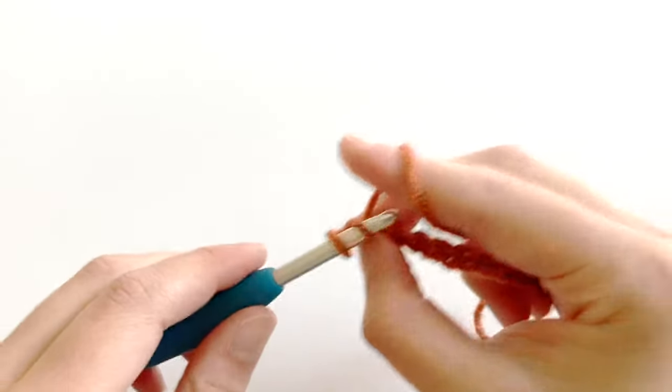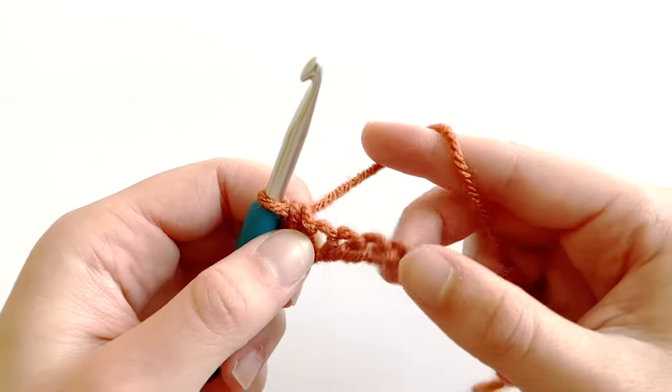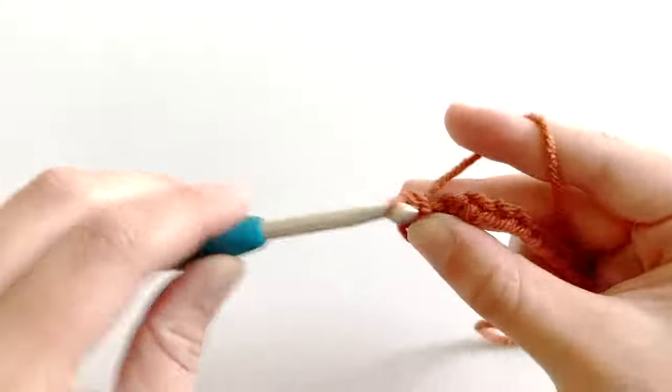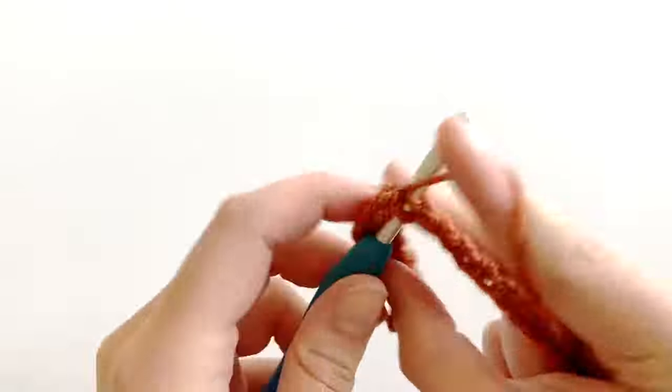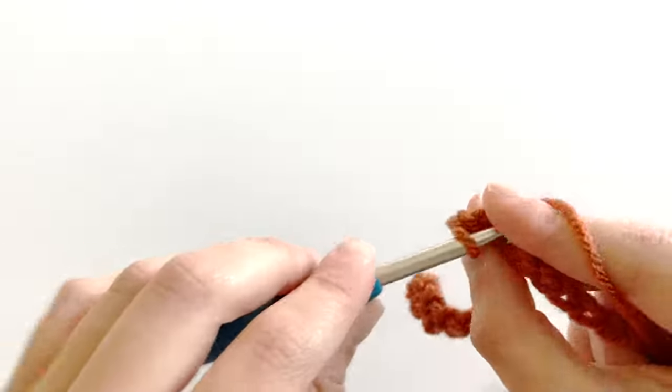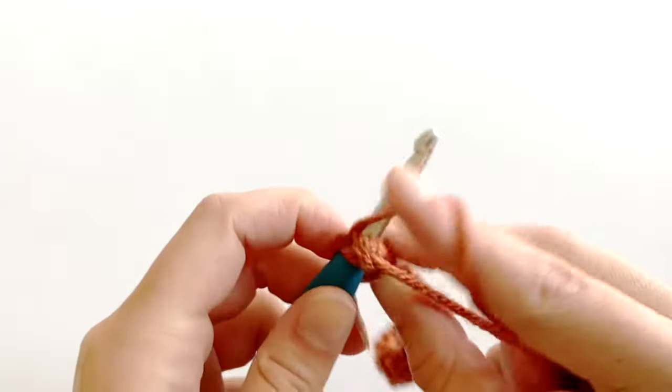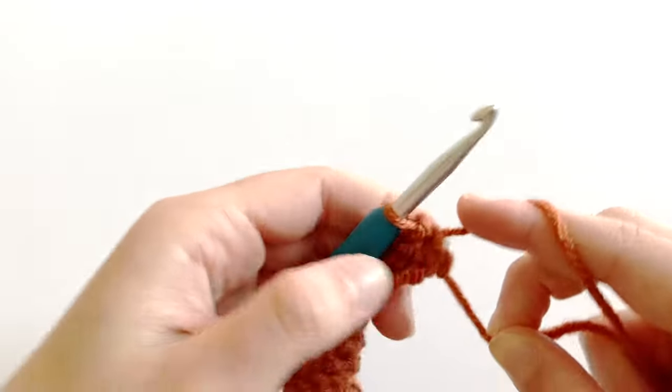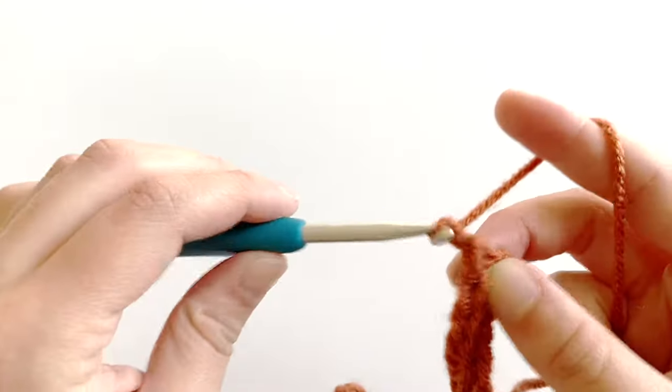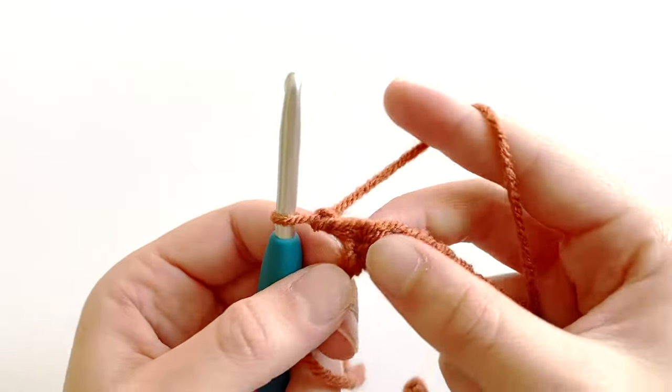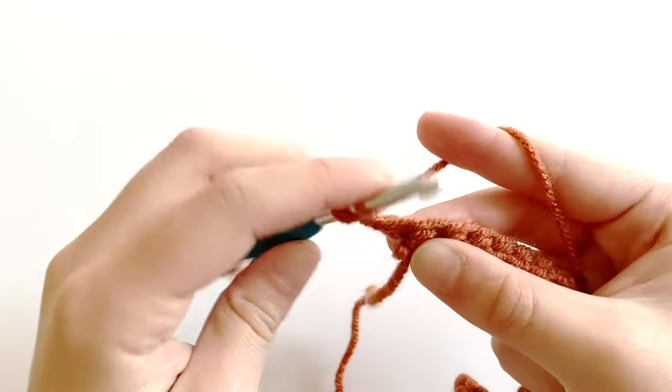And you're going to want to work one single crochet in every chain across. Okay, so I just reached the end of row one. Now I'm going to chain one and turn, and in that first stitch I'm going to want to work one treble crochet.